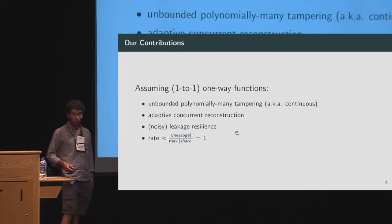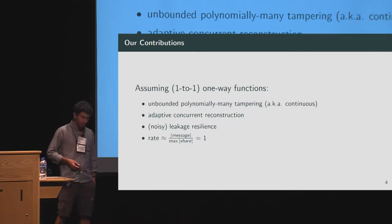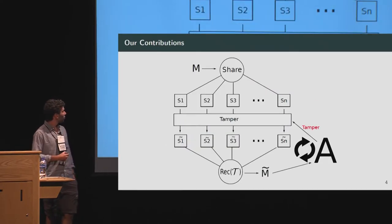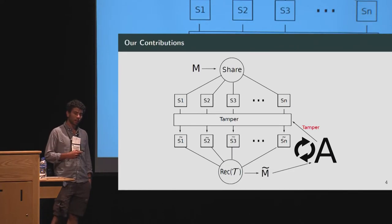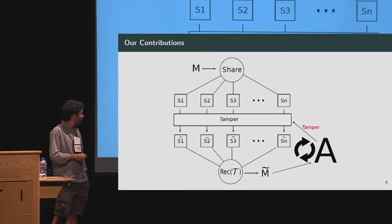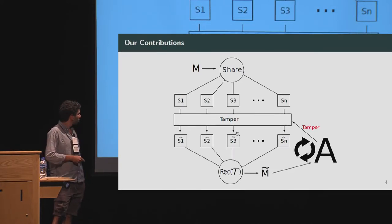Our contributions are the following. Assuming one-to-one one-way functions, we get non-malleable secret sharing with polynomially many tampering security. This means the security experiment is not just one-time, but generalizes to a many-time tampering setting where the adversary can adaptively choose a tamper function, see the resulting message, then choose another tamper function, and so on. We achieve unbounded tampering, sometimes called continuous non-malleability.